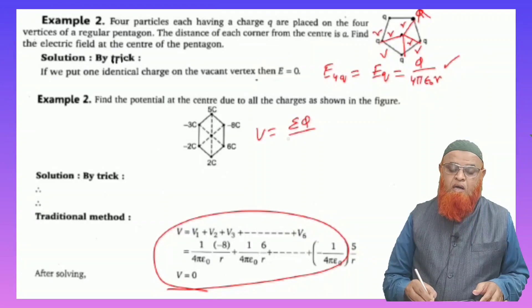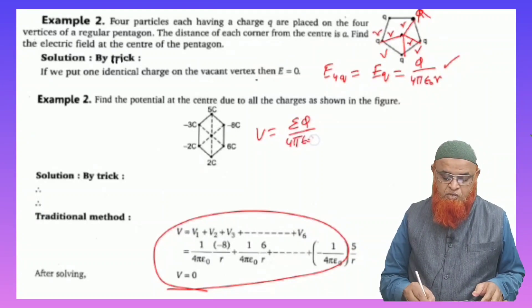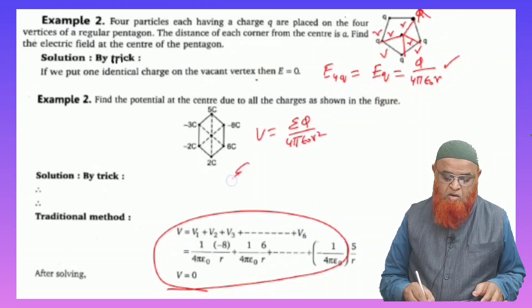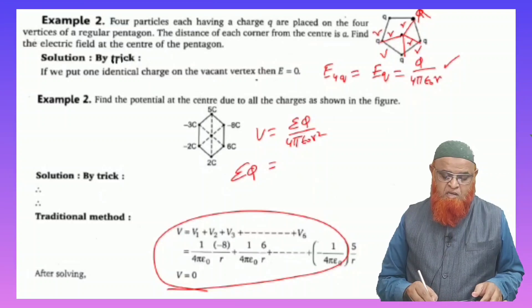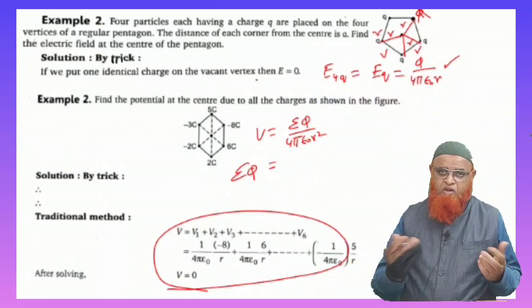Here you know electric potential is nothing but Σq by 4πε₀ into r². If you find out Σq, okay, that means the net charge, then you can find out the net potential also.